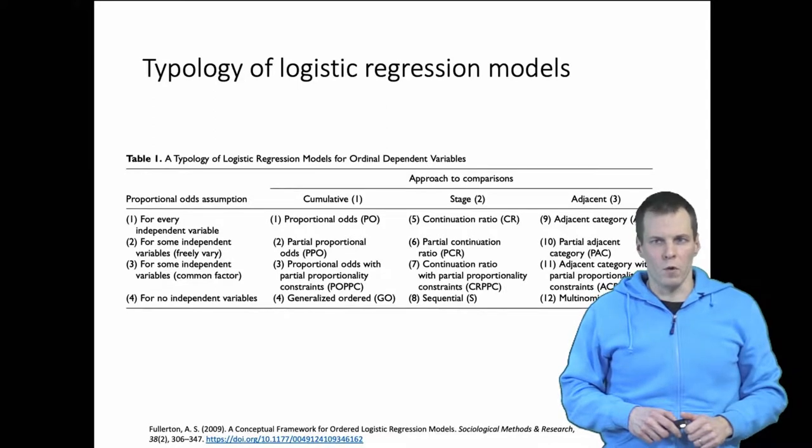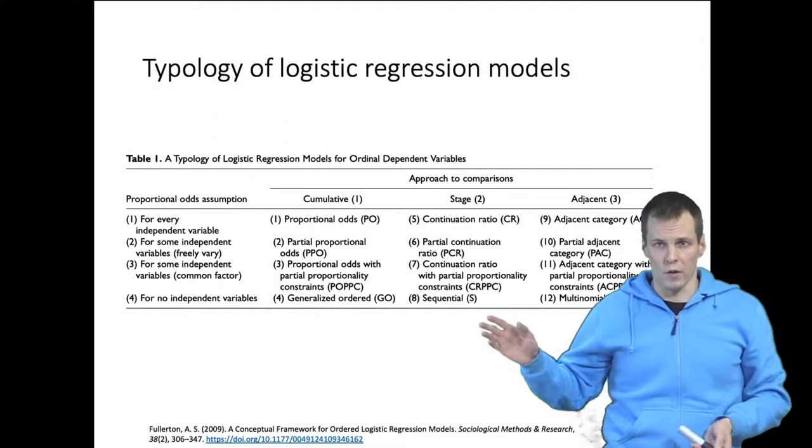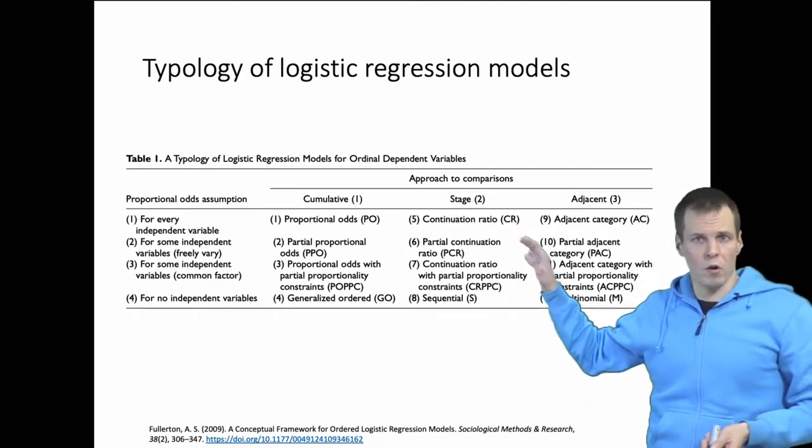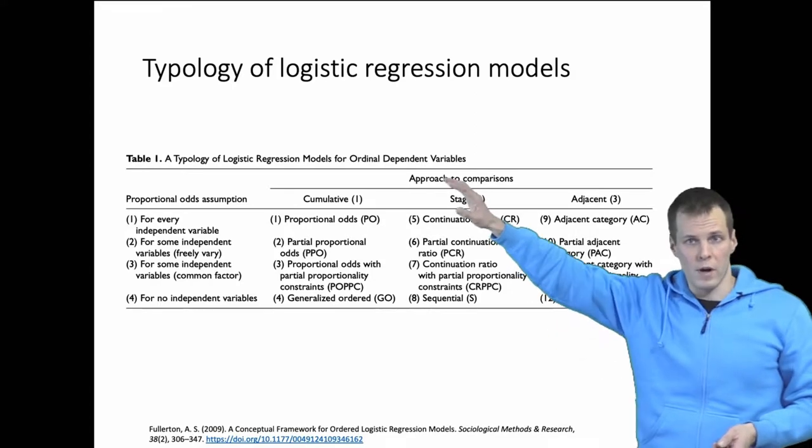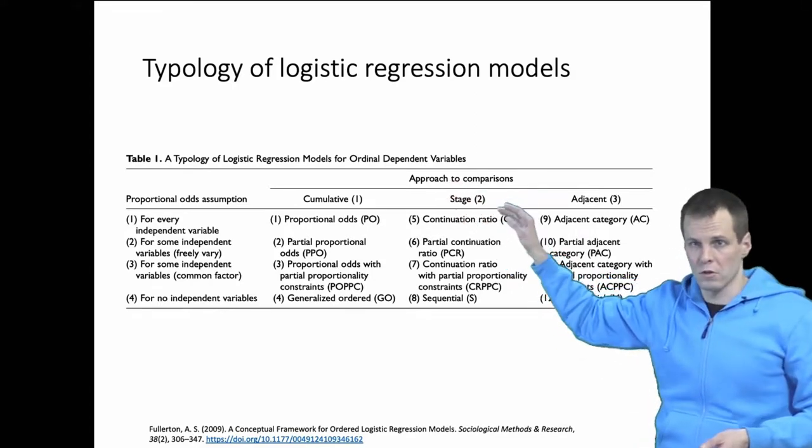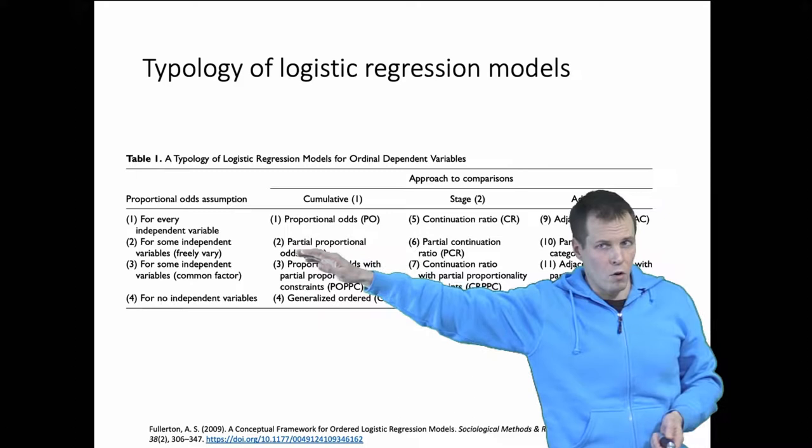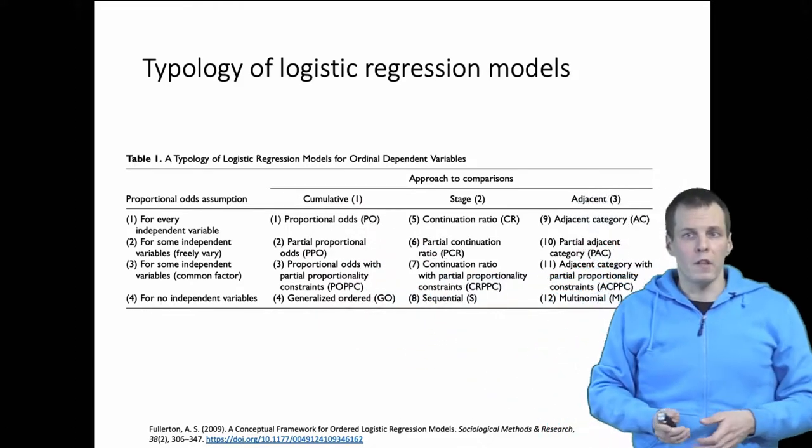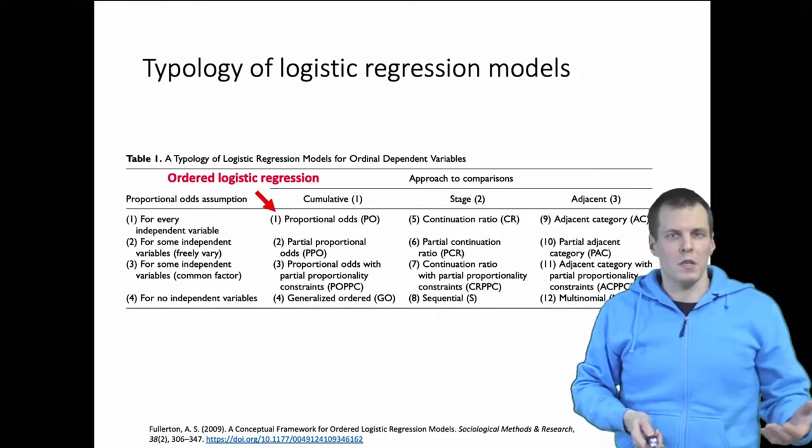This article by Fullerton in Sociological Methods and Research presents the following categories. They have 12 different categories organized along two dimensions: approach to comparisons, and parallel odds or proportional odds or parallel lines assumption. We have the most constrained model, which is the traditional ordered logistic regression analysis.